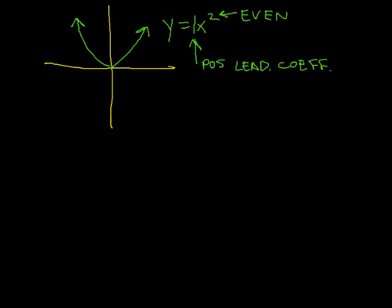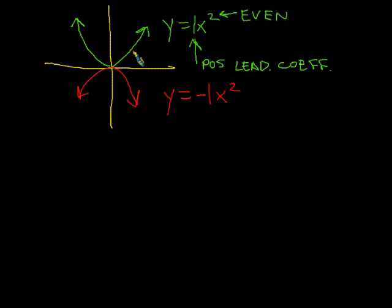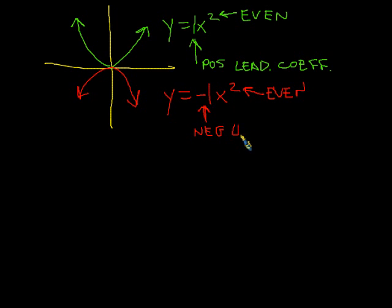Any time we have a negative leading coefficient or a negative a value, we will end up with a frowny face parabola. The green parabola is our model for all even degree polynomials with positive leading coefficients. The red parabola is our model for all even degree polynomials with a negative leading coefficient. So these two parabolas are our model for end behavior for all even degree polynomials.